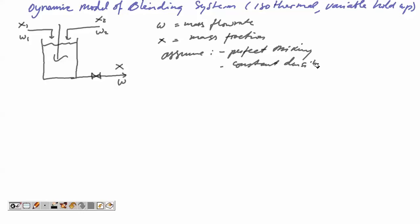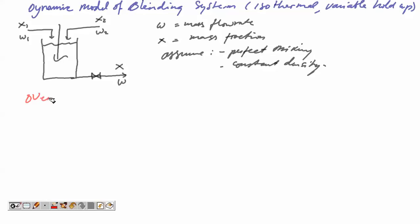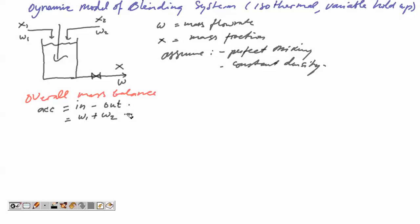So how do we derive the differential equation for this case? First, from the overall mass balance: accumulation equals input minus output. The mass input is w1 plus w2, mass output is w, and the accumulation is rho times V. Because V varies with time, V will change with respect to time. So this gives us our first differential equation: d(rho·V)/dt = w1 + w2 - w.